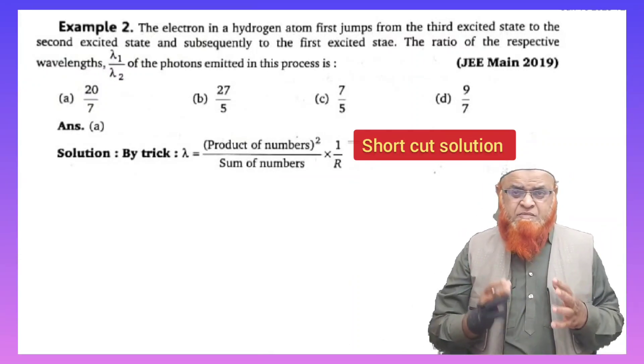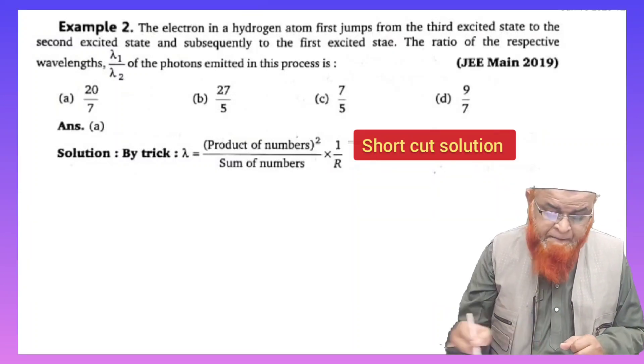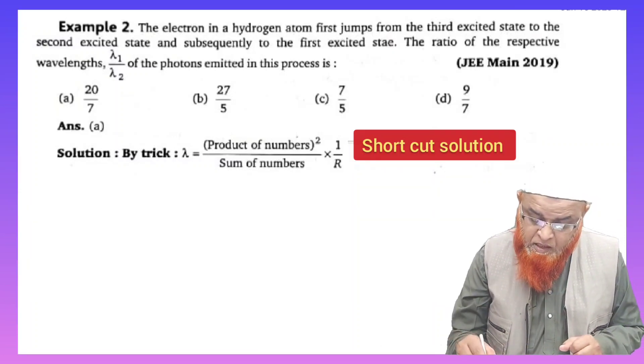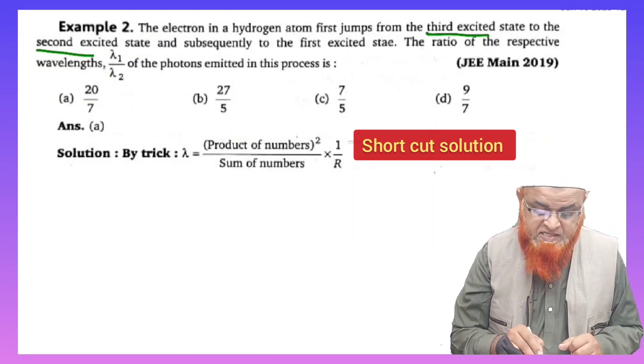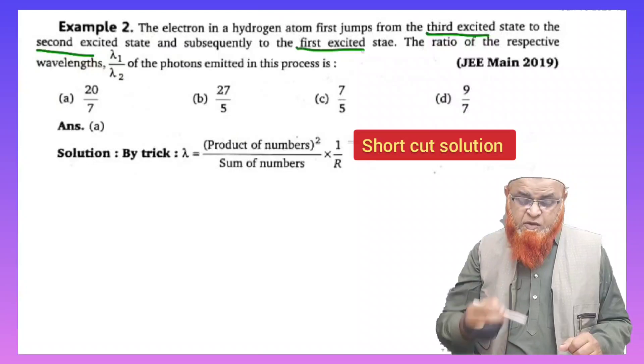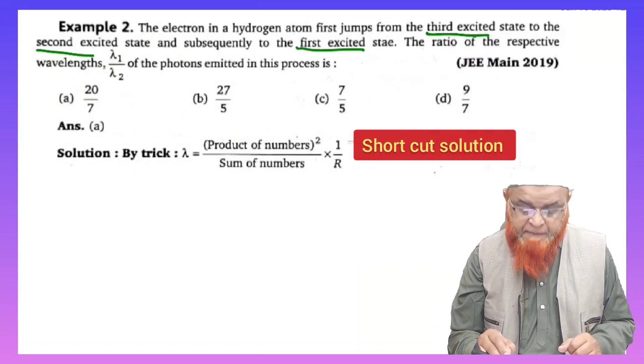In this question, the electron jumps from third excited state to the second excited state and subsequently to the first excited state. So there are two transitions which are going to take place.